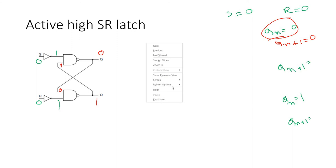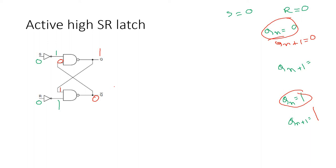Now suppose the previous state Q(N) = 1. The 1 feeds back to the second NAND gate. Both inputs of the second NAND gate are now 1, so Q̄ = 0. This Q̄=0 flows to the first NAND gate, giving it inputs 1 and 0, so Q(N+1) = 1. So if the previous state was 1, the present state also remains 1. Therefore, when S=0 and R=0, the circuit holds the previous state with no change.